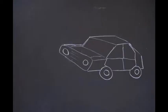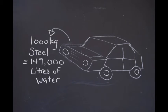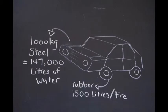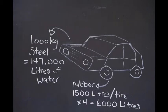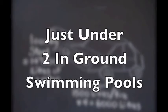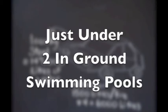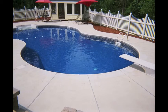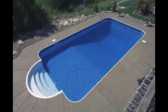It doesn't get you very far on one of these. It takes a thousand kilograms of steel to make a car, which requires 147,000 litres of water to make that steel. And what about the rubber on all the tires? Fifteen hundred litres per tire times four is six thousand litres. That adds up to enough water to fit into two in-ground swimming pools. Maybe every time you see a car you should just imagine two in-ground swimming pools driving around on a set of wheels.